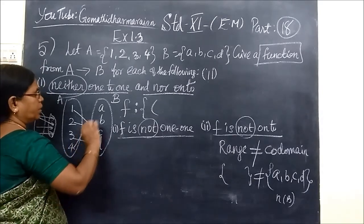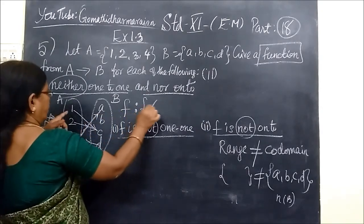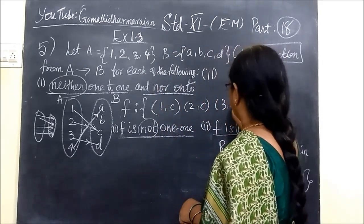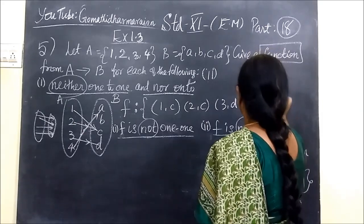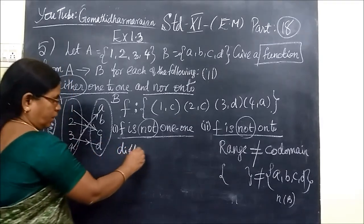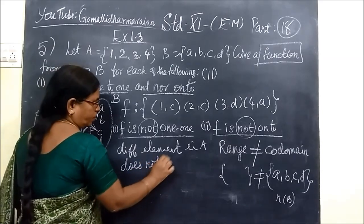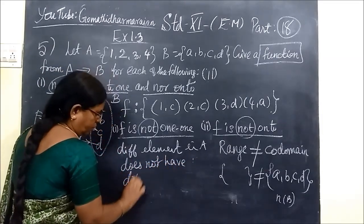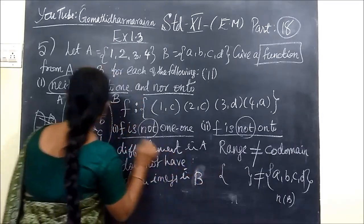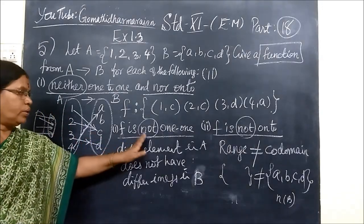Image of 3 is D, and image of 4 is A. So you can write the function as: 1→C, 2→C, 3→D, 4→A. So F is not one-one, because different elements in A do not have different images in B. So F is not one-one.